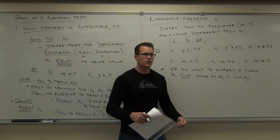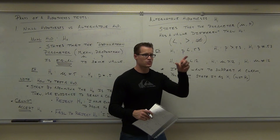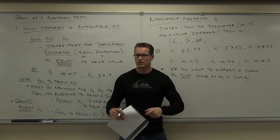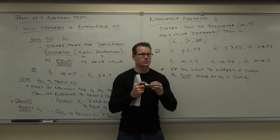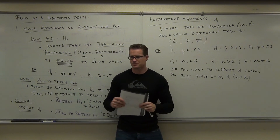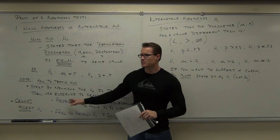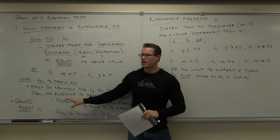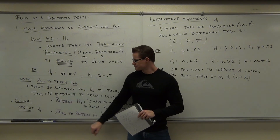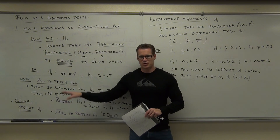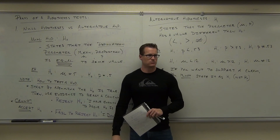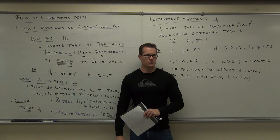You can't prove H sub zero right. All you can do is prove it wrong. You don't want to make a claim you're trying to prove right and then prove it wrong, do you? Let's say you stated your claim as H sub zero — all you could do with that is prove your claim wrong or not prove your claim at all. Neither of those is a good outcome.